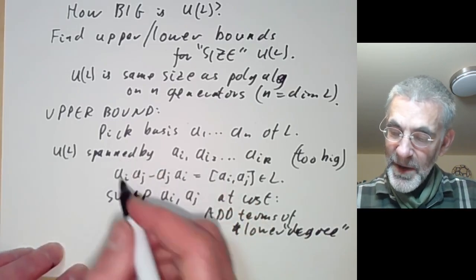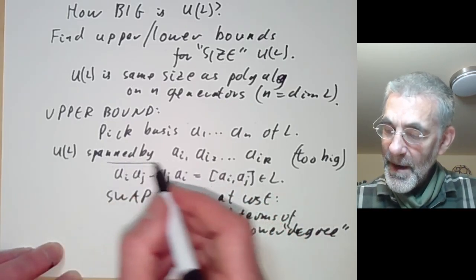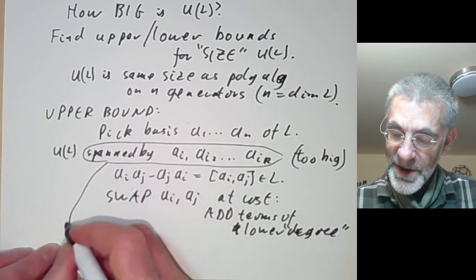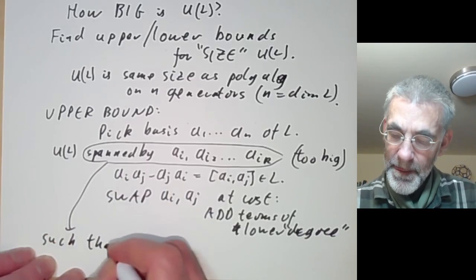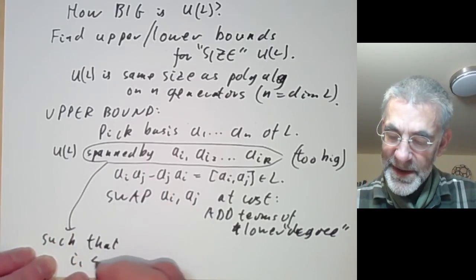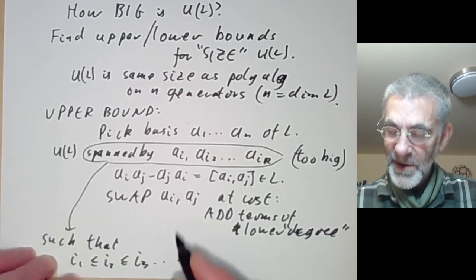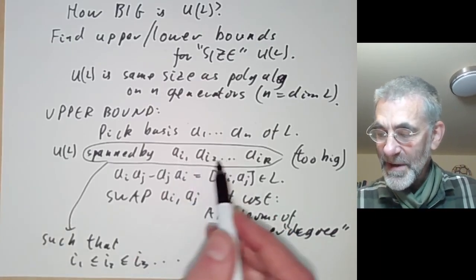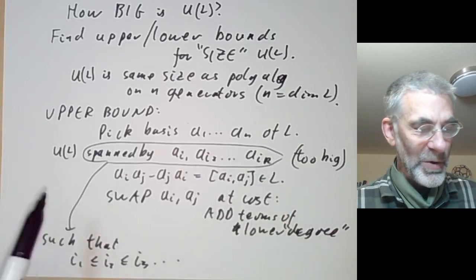So U(L) is actually spanned by elements aᵢ₁ aᵢ₂ ··· aᵢₖ such that i₁ ≤ i₂ ≤ i₃ ≤ ···. We can assume that all the subscripts are in increasing order.